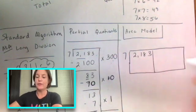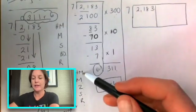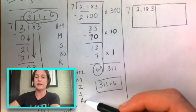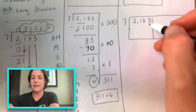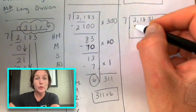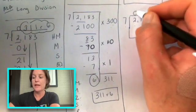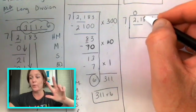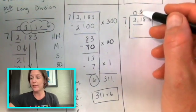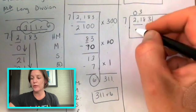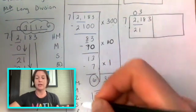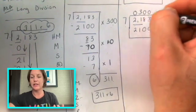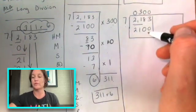And we follow the same steps as before. So how many, multiply, zeros, subtract, repeat. How many sevens does it take to get to two? Zero. What about 21 though? We could get 7, 14, 21. So that's our how many step. Now, if we multiply, we'll get three times seven, which is 21. Let's plug in those zeros because really 300 times seven equals 2,100.